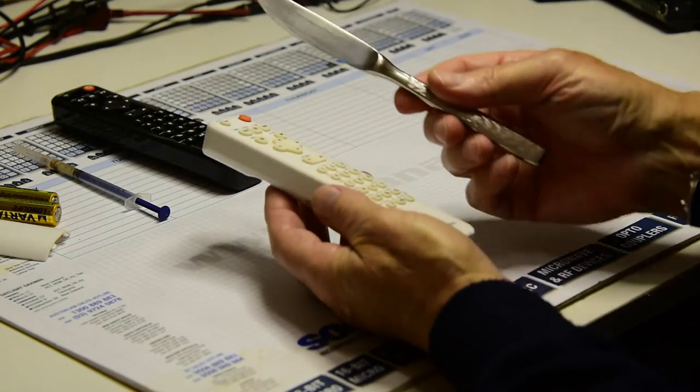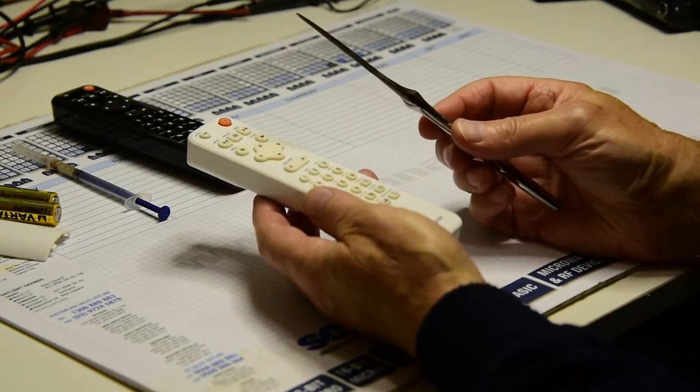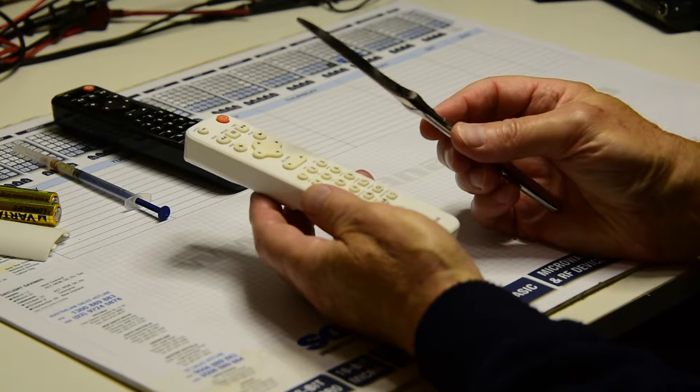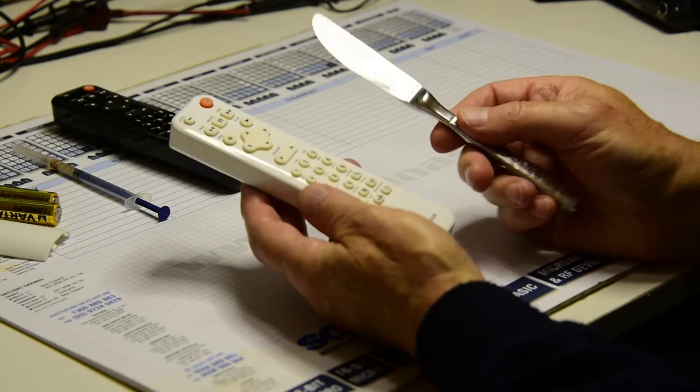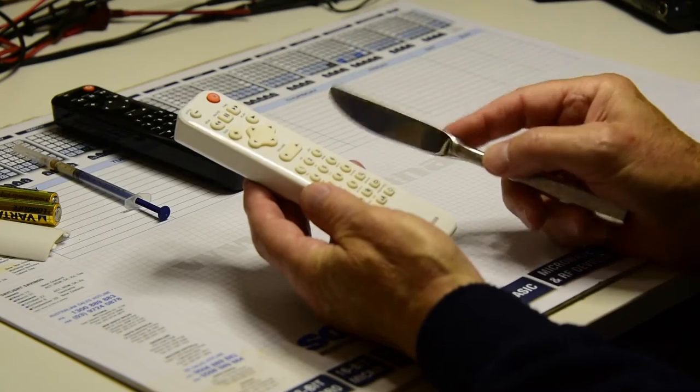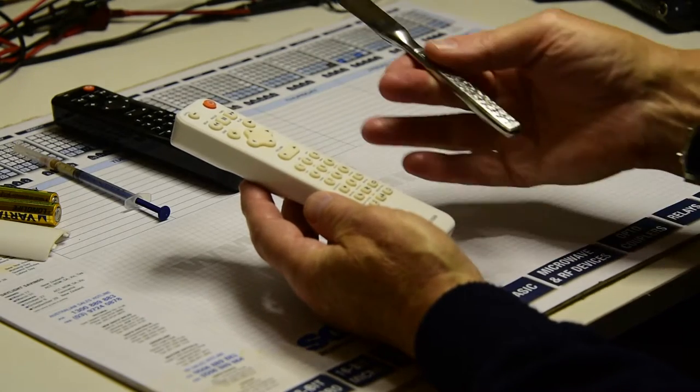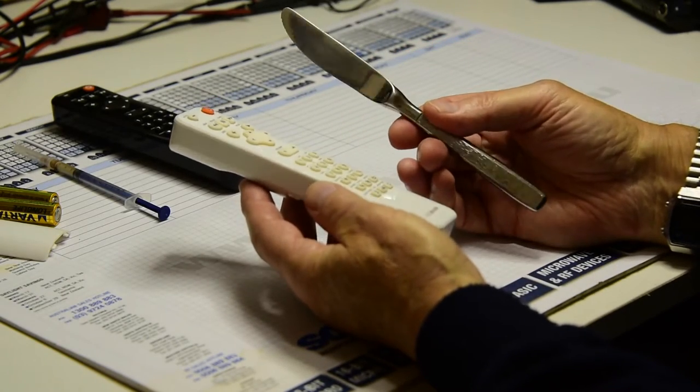Then you'll need something sharp, or should I say thin, but not too sharp. If it's too sharp you're going to score and cut the plastic, so the ideal thing for me is a bread and butter knife from the kitchen.